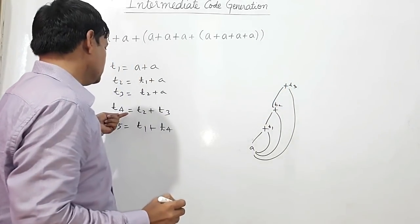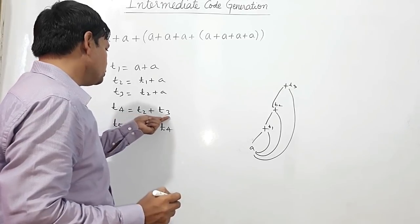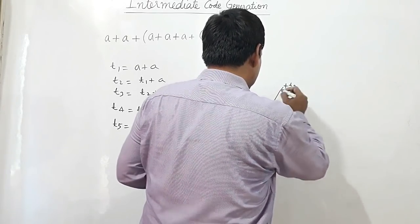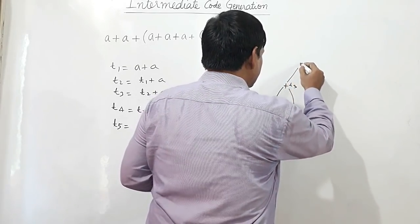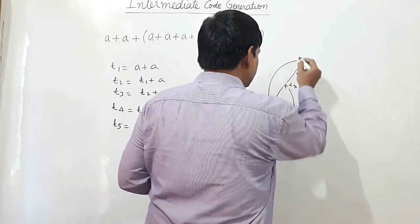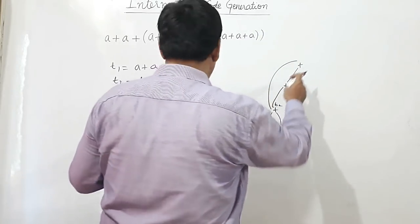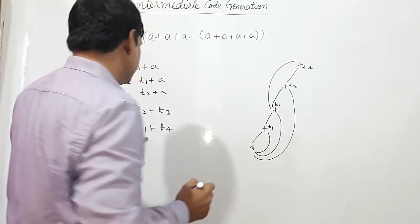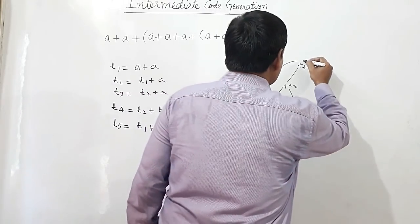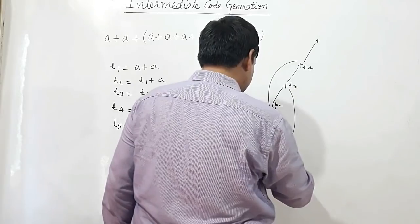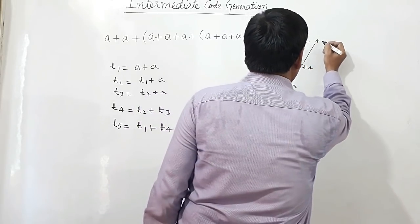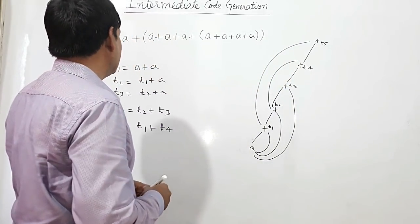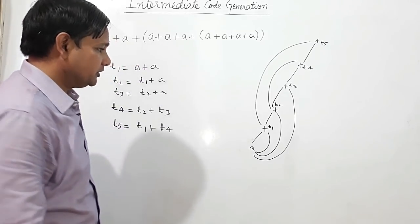Now t4: t4 is the result of t2 plus t3. t2 is here and t3 is here. So I am taking the result of this t3 and this t2. The result is t2 plus t3 is with t4. Now t5: t1 plus t4. So t4 is here, t1 is here. So the result is t1 plus t4. This is the directed acyclic graph for this expression.